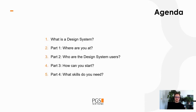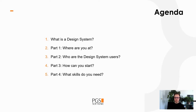We will go through these five points. We'll start with defining what a design system is, then we'll think about how our products relate to each other. Next we'll think of the users of your design system, then we'll consider several options for how you can start, and in the end we'll think of the skills you may need in your team to create a design system.